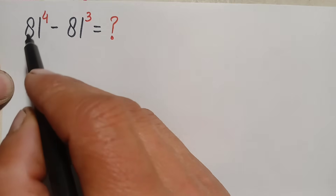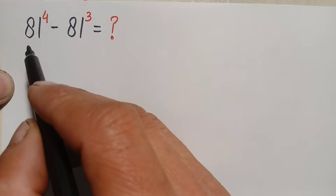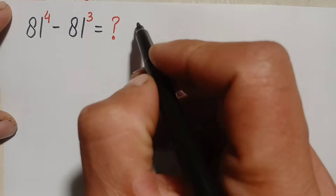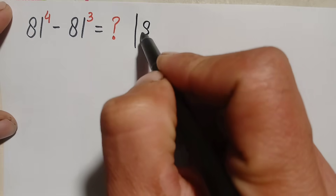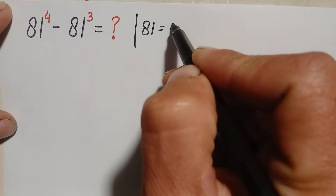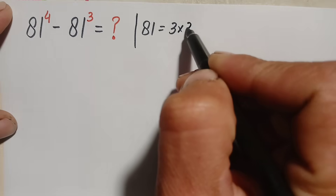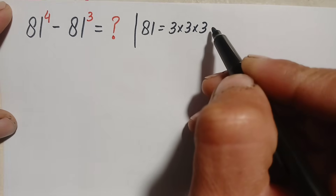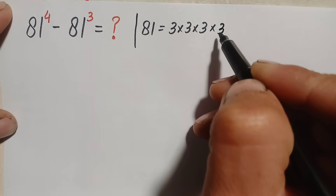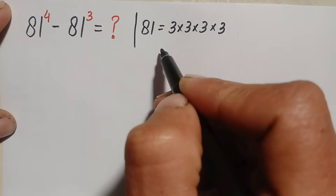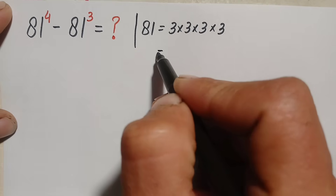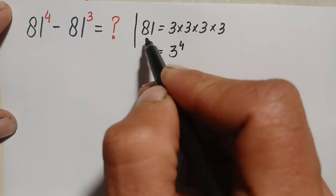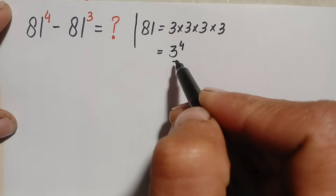First of all we will try to find out and change this 81 to its exponential form. So we can write 81 as 3 times 3, which is 9; 9 times 3 is 27; and 27 times 3 is 81. So 3 appears 4 times, meaning we can write this as 3 to the power 4. So the exponential form of 81 is 3 to the power 4.